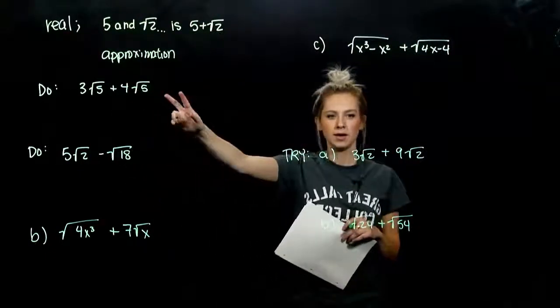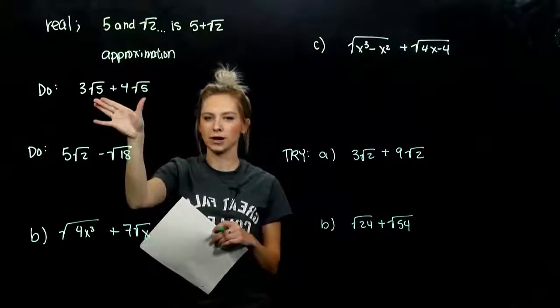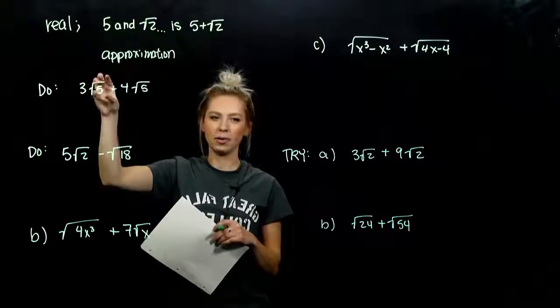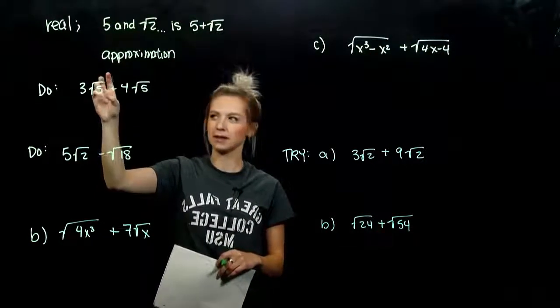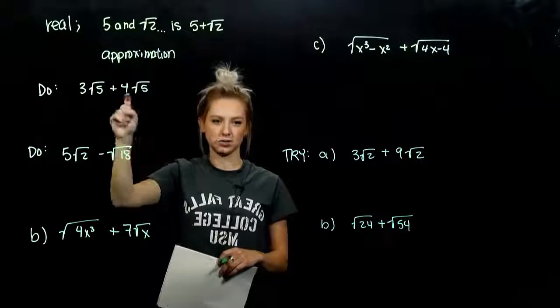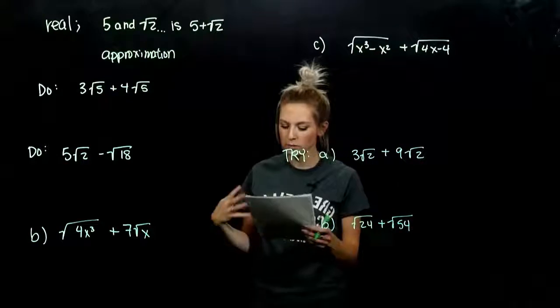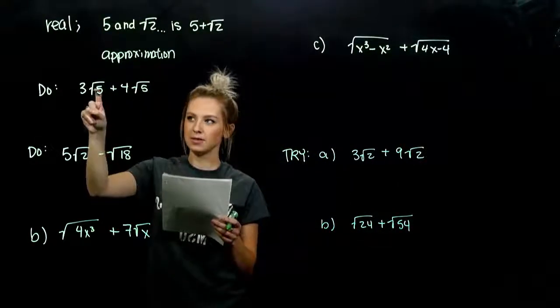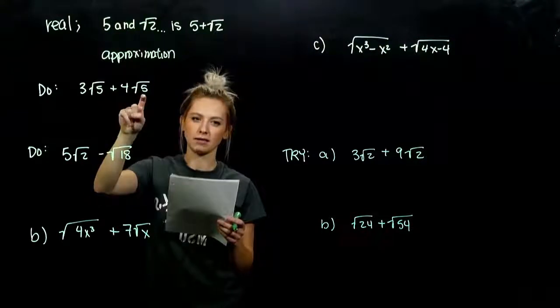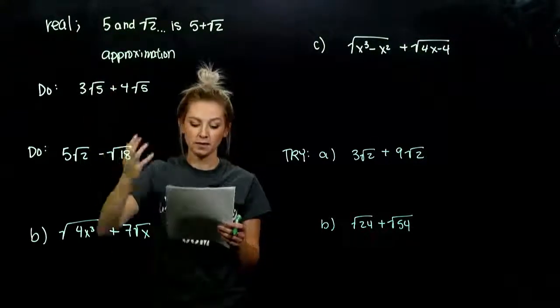When we're dealing with trying to combine radicals with addition or subtraction, we need their backs to match exactly. We have to have the same exact radical with the same exact radicand to be able to combine them. So when we have like radicals, in this case, we have the same radical and the same radicand. Everything, their butts both match. That's usually what I say. Then we can combine them. We can collect our like terms.